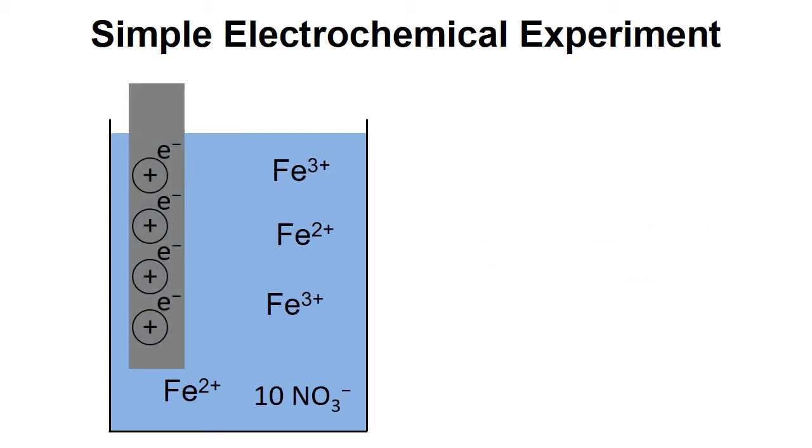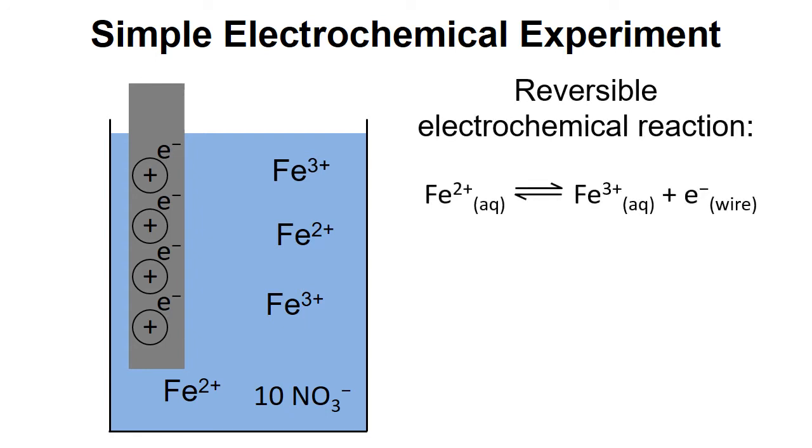If we place the platinum wire into this solution we can get a reversible electrochemical reaction occurring where Fe2+ can turn into Fe3+ by giving up an electron to the wire. The reverse is also true: Fe3+ can borrow an electron from the wire and turn into Fe2+.